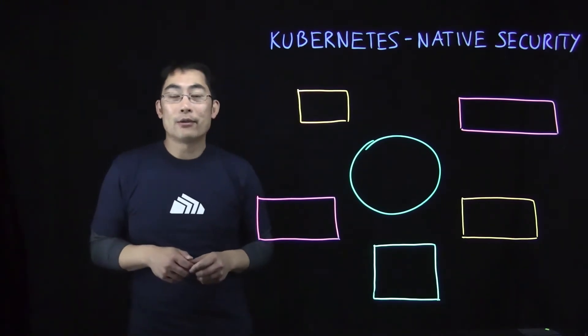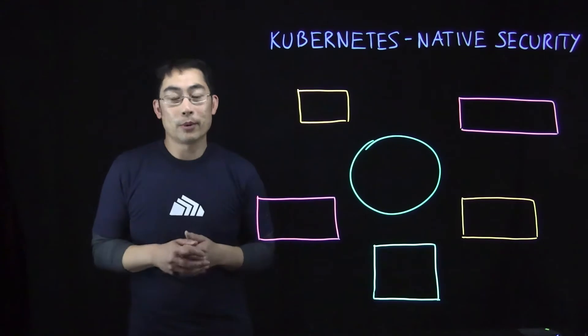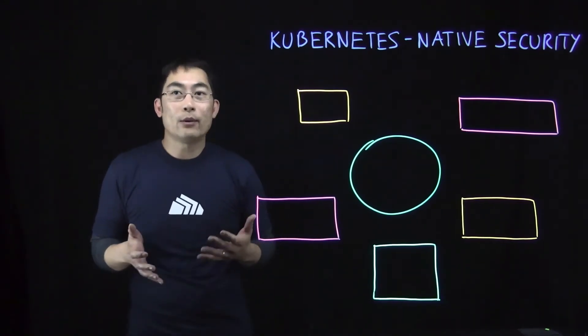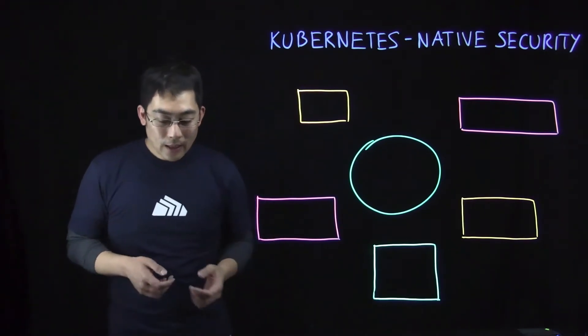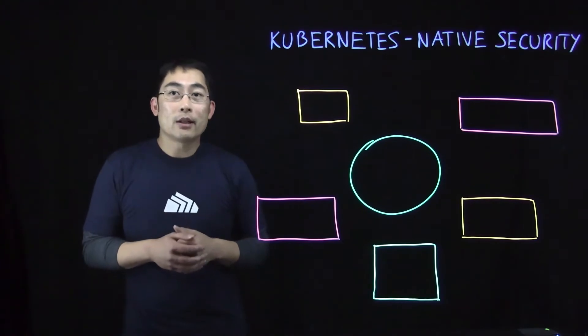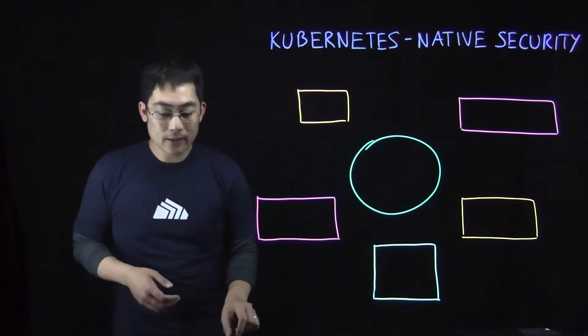Kubernetes Native Security is based on a single fundamental principle, which is that security is most effectively implemented when it's aligned with the orchestration system managing your containers. There are six key criteria that we consider to make a security solution Kubernetes Native.